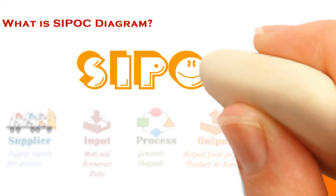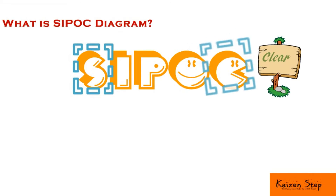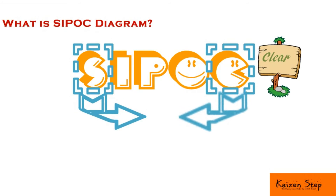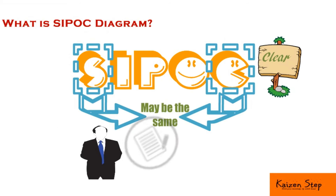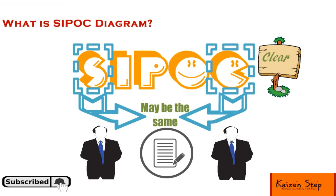We have finished the definition of SIPOC. One important note regarding supplier and customer: in some processes, the supplier and the customer may be the same person. For example, in a staff recruitment process, the line manager is the supplier — he provides the input by requesting to fill a vacancy — and he is also the customer who receives the output, which is the new staff member.